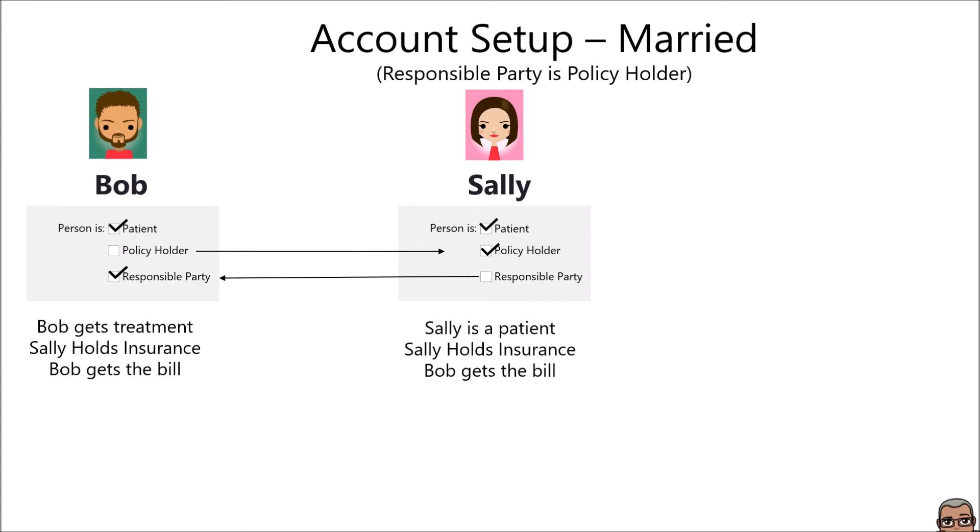Now let's marry off Sally to Bob. Bob becomes a patient, Sally is the policyholder, and let's say Bob is the one who wants to get the bill. So Bob is a patient, Sally holds his insurance, and Bob gets the bill. Sally is still a patient, Sally still holds the insurance, and Bob now gets the bill. We just check the boxes and determine that Bob is the responsible party for Sally.